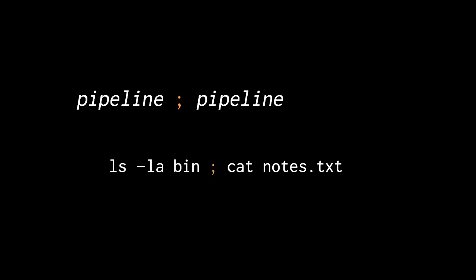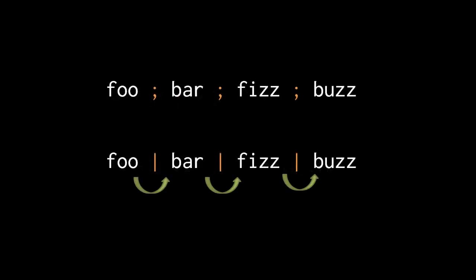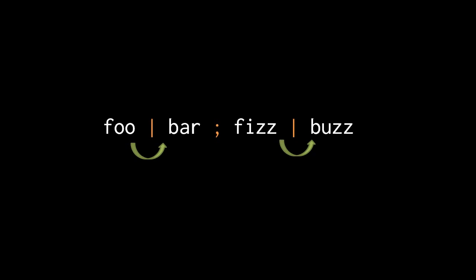For example, two pipelines — the first being just ls and the second just cat — separated by a semicolon: the shell executes the first pipeline, waits for it to finish, then executes the second. The important distinction is between semicolon and the pipe character. Writing foo, bar, fizz, buzz separated by semicolons executes those commands in sequence one after another, whereas separating them all with pipes connects them together and runs them in tandem. If you change the middle pipe to a semicolon, you get two separate pipelines: foo and bar run first, then when complete, the shell runs fizz and buzz.